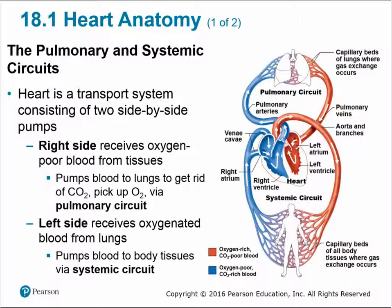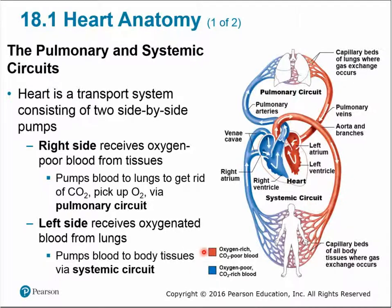The heart is the body's transport system and consists of two side-by-side pumps. The right side of the heart is going to receive oxygen-poor blood from the tissues — denoted in the figure as blue — and then pump the blood back to the lungs to get rid of carbon dioxide and pick up oxygen via the pulmonary circuit. The left side of the heart is going to receive oxygenated blood from the lungs and pump the blood to the body tissues via the systemic circuit, denoted as red, meaning oxygen-rich blood.